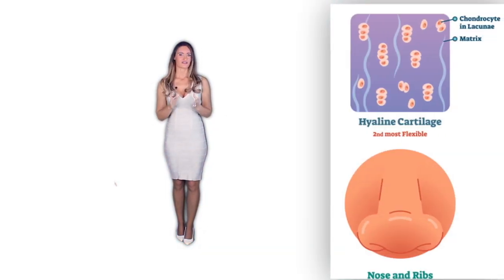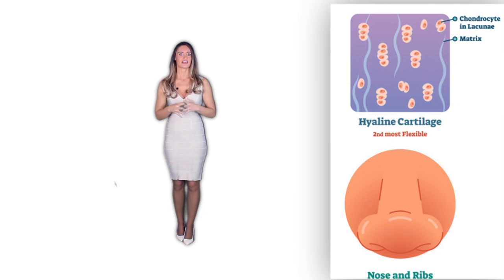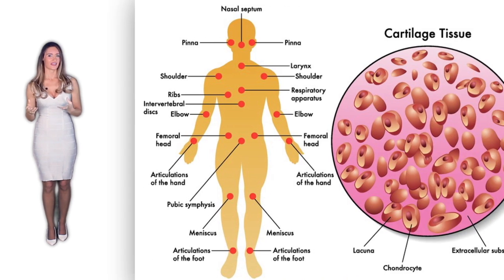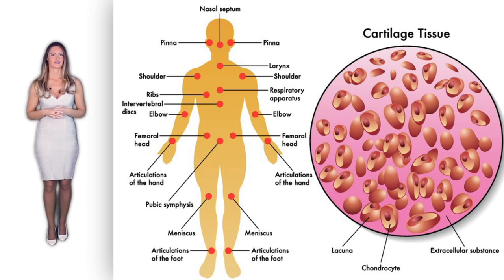Hyaline cartilage is the first cartilage type. It has fibers of collagen that are very fine within its extracellular matrix. It is the most common and has a glass-like appearance due to the presence of a translucent protoplasm and granules. It can only exist in minute quantities together with very fine filaments that interlace each other. Hyaline cartilage is located in many joints where bones end, in soft parts of the nose, and in some parts of the respiratory passages that have a ring-like appearance, like the trachea. This cartilage is essential for growth and development of bones.